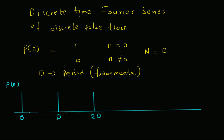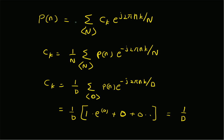To summarize, we have looked at the discrete time Fourier series of the discrete pulse train. The pulse train signal p of n is defined as the value equal to 1 at n equal to 0 within the fundamental interval, and it is periodic with period d. Graphically, p of n equals 1 at n equal to 0, d, 2d — any multiple of d — and 0 everywhere else. To find the discrete Fourier series we use the definition: p of n equals the summation over the fundamental period n equal to d of c_k e to the power j 2 pi n k over capital N.